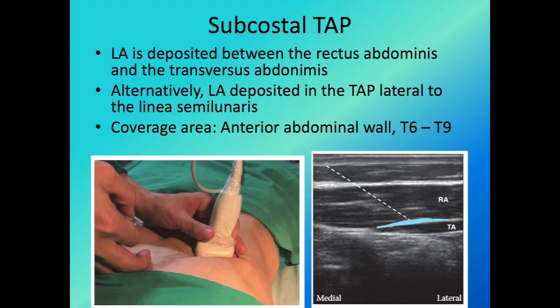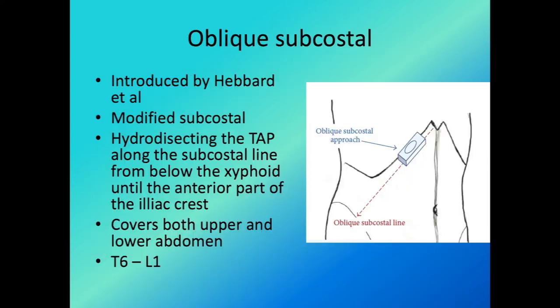The subcostal TAP block involves infiltrating local anesthetic between the rectus abdominis muscle and the transverse abdominis muscle at the subcostal region. This technique is used for anterior abdominal wall surgery, covering T6 to T9. An oblique subcostal approach can extend the infiltration down along the transverse abdominis muscle, and some practitioners insert a catheter in the transverse abdominis plane for continuous LA infusion — even bilateral oblique subcostal catheters for upper abdominal wall surgery.